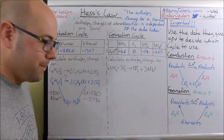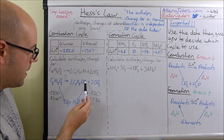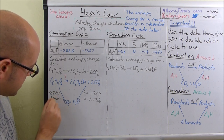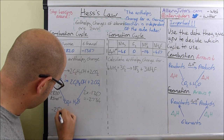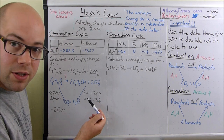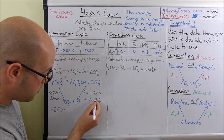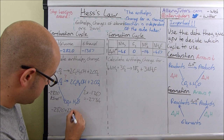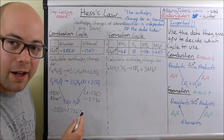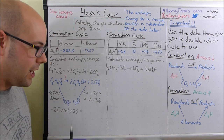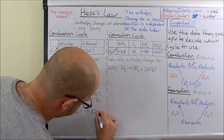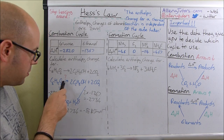Now we use the cycle. We want to get from here to here, so we go via the bottom and back up. When you go with an arrow you keep that sign the same — so minus 2820 stays as minus 2820. When you go against the arrow, you change the sign. So minus 2734 becomes plus 2734. Put that all into your calculator and you should get minus 86 kilojoules per mole. That is your enthalpy value.